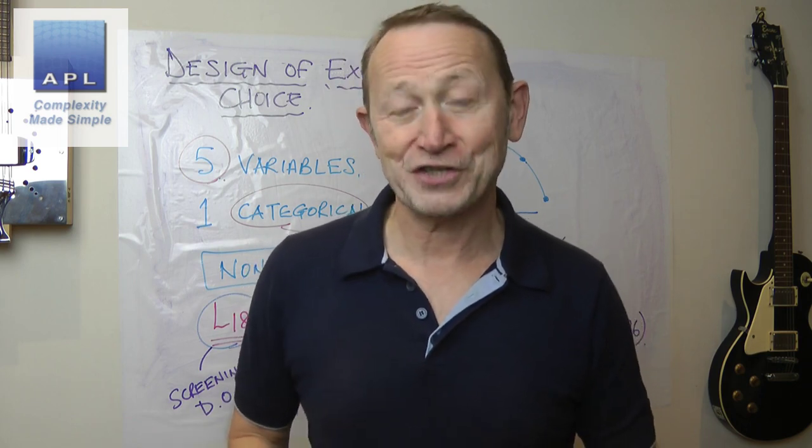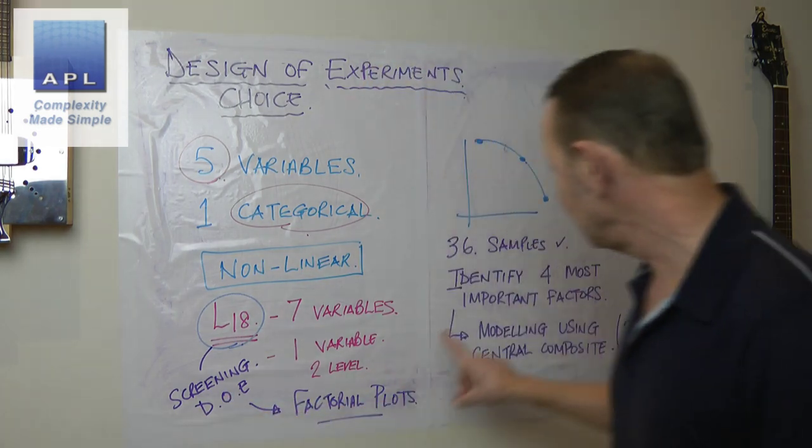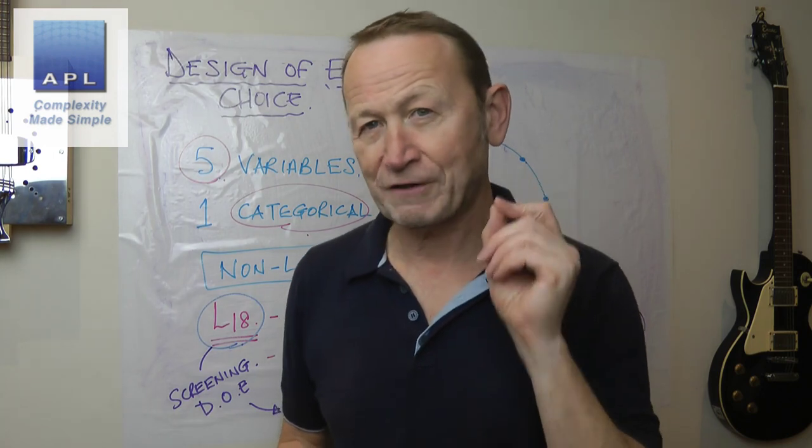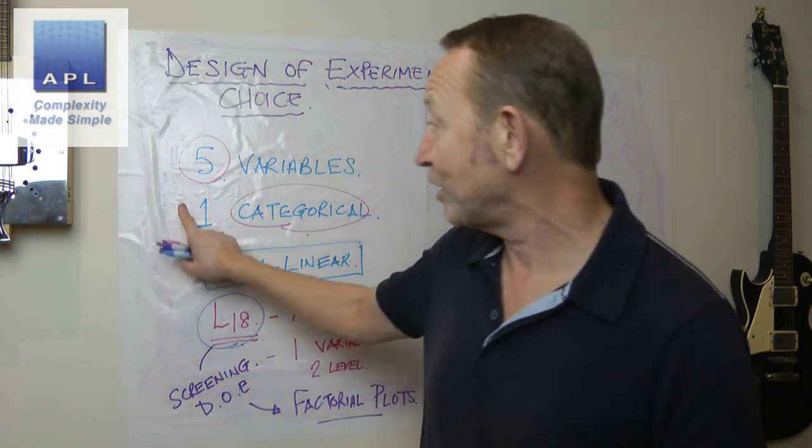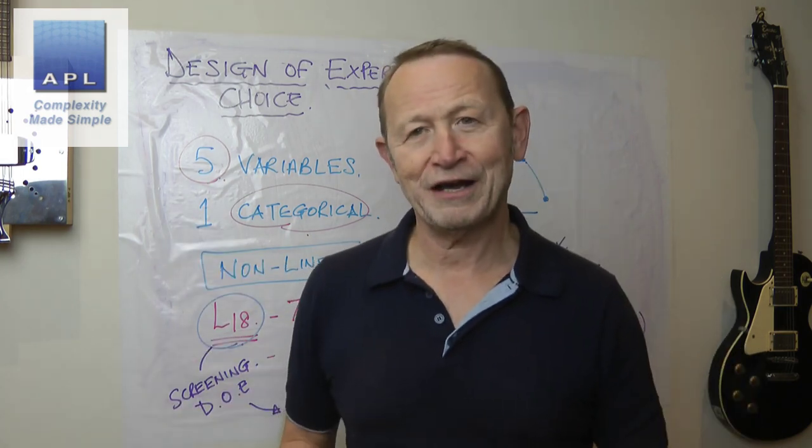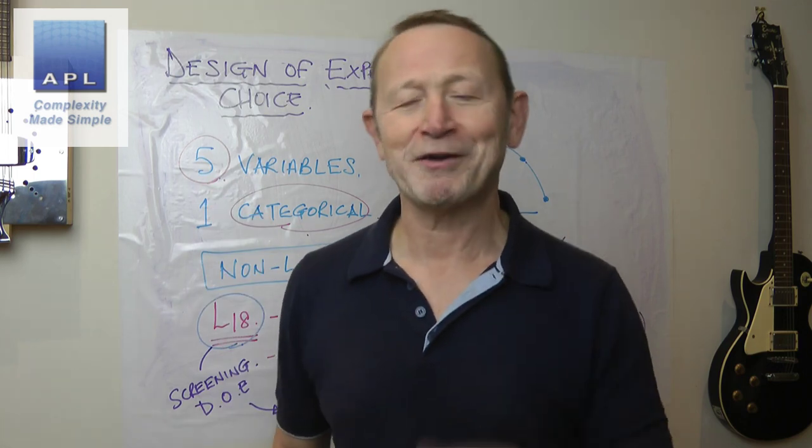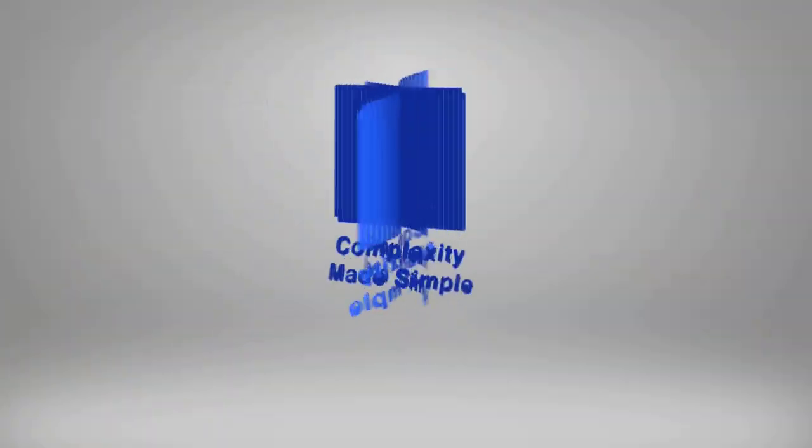So Mohammed, DOE screening then modeling with a central composite design—it's the most efficient way to find out the maximum about your process given the problem that you have. And if you do that, man alive, your business is going to make more money.